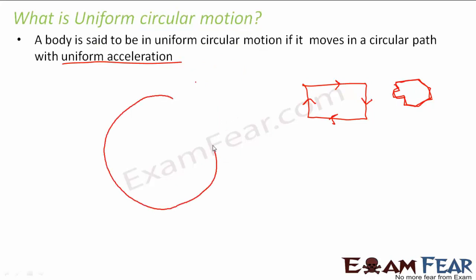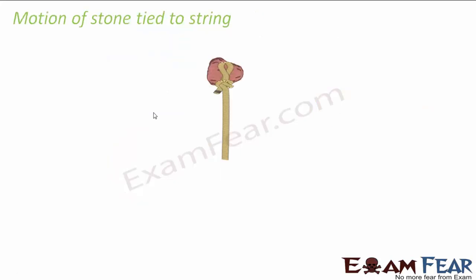Now if you consider a circular path, at every point your velocity changes direction. So at every point the velocity changes its direction, which means your velocity is always changing with time, and that is why we say the body has uniform acceleration. Throughout the entire circumference the velocity keeps on changing its direction, the velocity uniformly changes with time, and thus the body has uniform acceleration. Such a body is said to be in uniform circular motion.